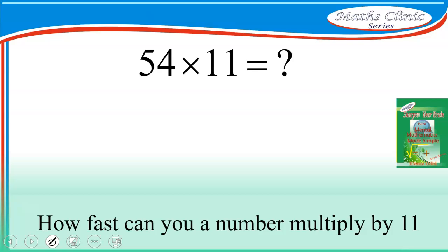How fast can you multiply a number 54 by 11? The trick is this. Just pick 5 and 4. Or pick 54 and open them apart. Add 5 plus 4, and that is 9. Put a 9 in the middle, and that becomes the answer. It means 54 times 11 is 594.